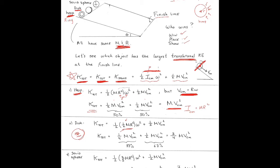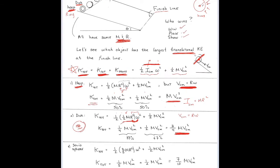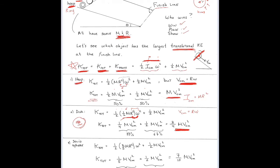When I multiply this out using the rolling condition v_cm = rω, I get one-quarter MV²_cm for the rotational part. Adding the translational term, the total kinetic energy of a rolling disc is three-quarters MV²_cm. The kinetic energy is no longer 50-50: one-third of the energy is rotation and two-thirds is translation (33% and 67%).